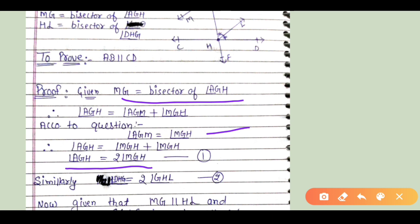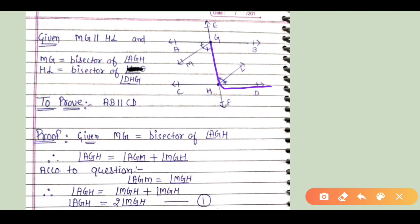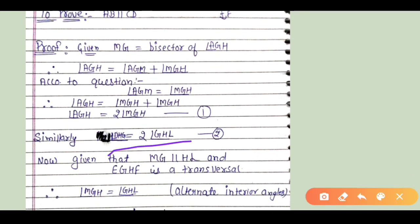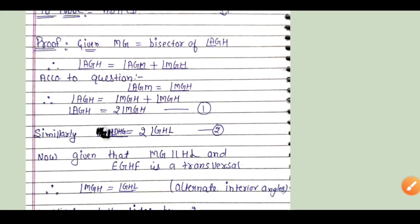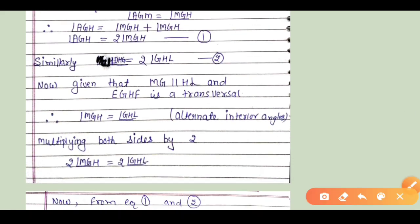Similarly, DH is the bisector of angle DHG, so the angle is divided into two equal parts. Now, MGH and DHL are alternate interior angles. Multiplying both sides by 2, we get 2 times angle MGH equals 2 times angle GH, which gives angle AGH equals angle DHG from equations 1 and 2.